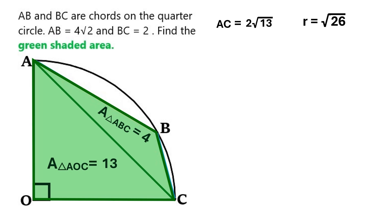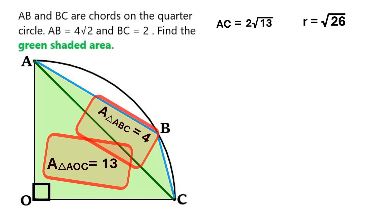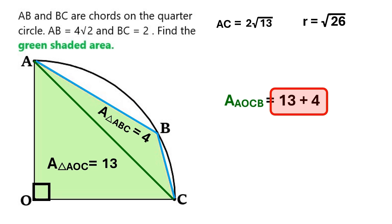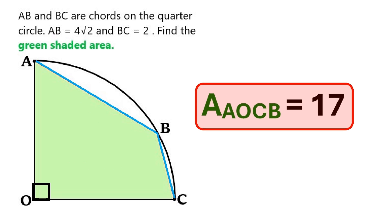Now, to find the green area, we simply need to add these two areas. It turns out the area of the green quadrilateral AOCB is 13 plus 4, which equals 17. So there we are, people. We found the area of the green region, and it's 17.